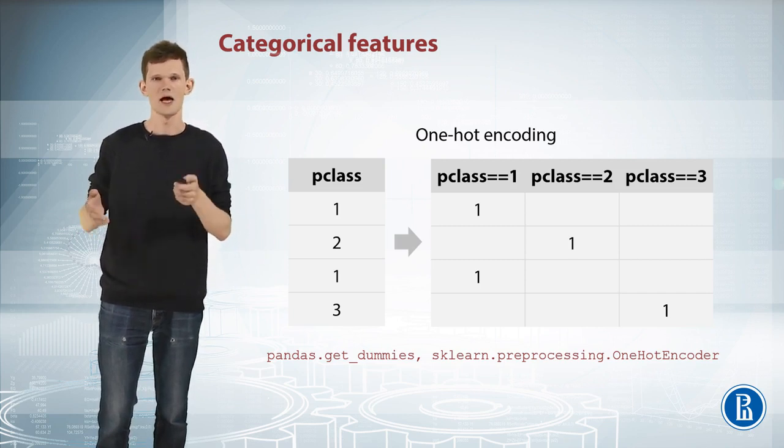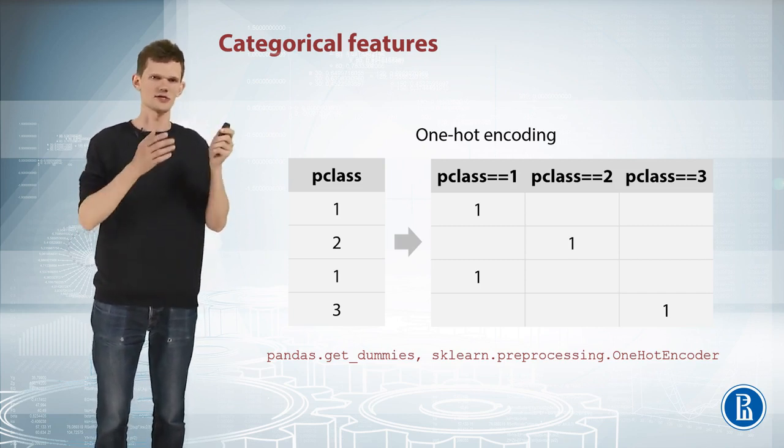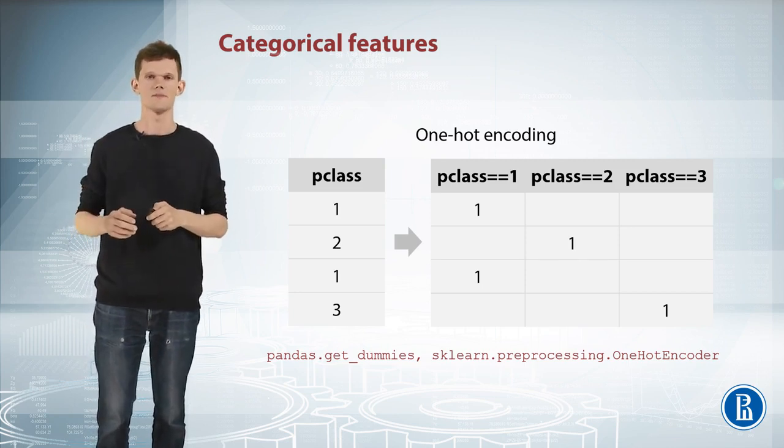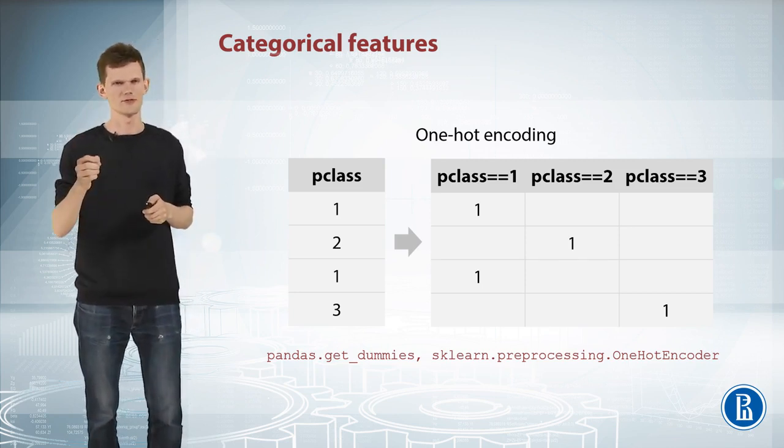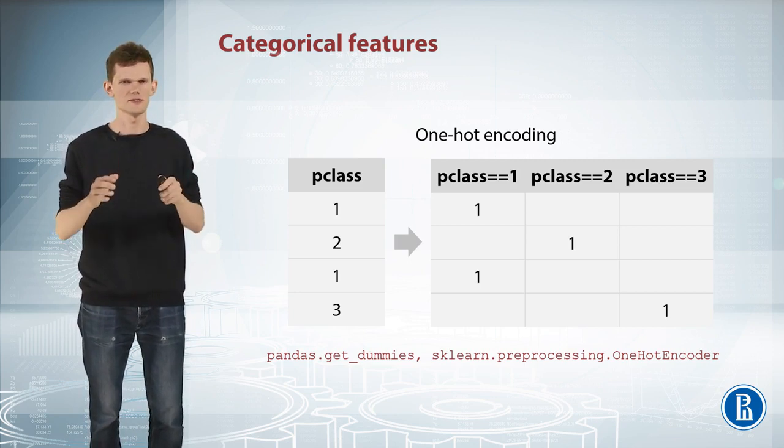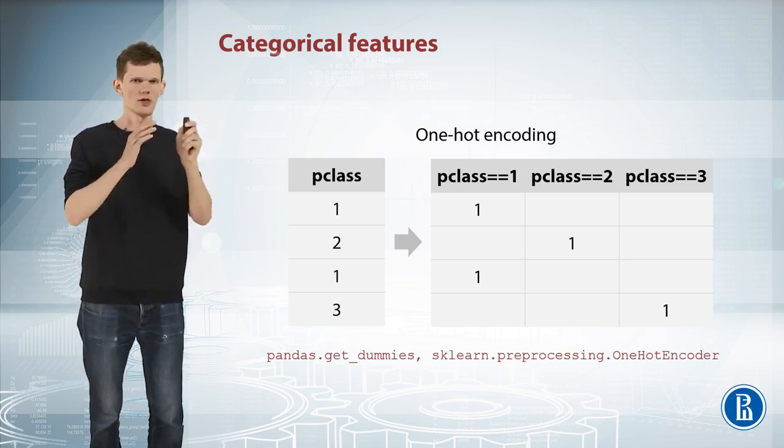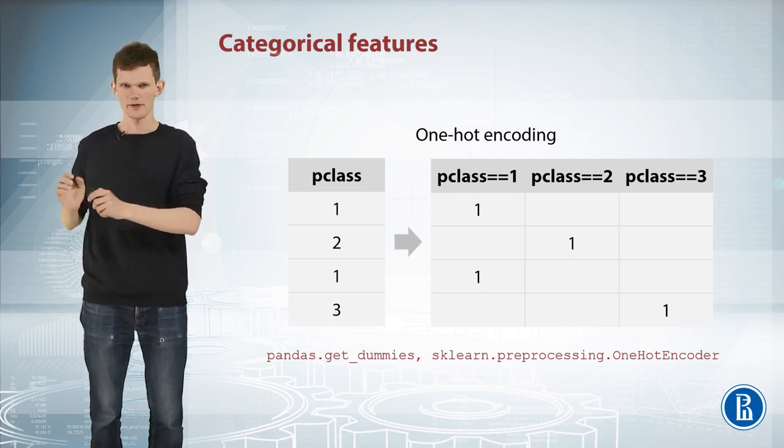Going with sparse matrices makes sense if number of non-zero values is far less than a half of all values. Sparse matrices are often useful when we work with categorical features or text data. Most of the popular libraries can work with these sparse matrices directly, namely XGBoost, LightGBM, sklearn, and others.